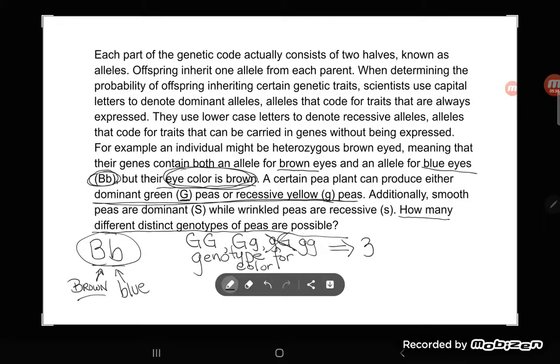Now let's look at the next choice here. We also are going to get a genotype for that wrinkled or smooth. I'm just going to go ahead and call that smoothness. Going back to the problem, it says additionally smooth peas are dominant capital S while wrinkled peas are recessive little s. So how many genotypes are possible in this case? Well, we could have a dominant from mom and a dominant from dad for a big S big S. We could get a dominant from one parent and a recessive from another parent, so big S little s. Or we could get two recessives, one from each parent. So we also have three choices for this.